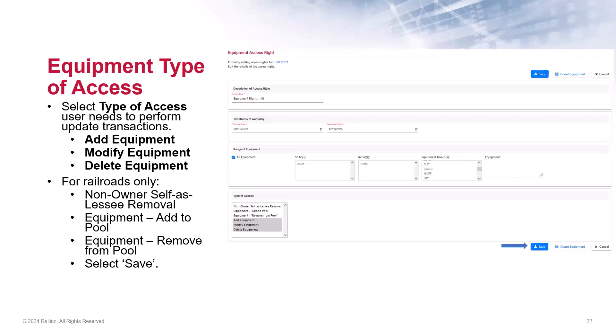For any equipment-related access requirements, admins can specify the range of equipment. But this user will have access to all equipment and you will select the specific type of access the user needs. The equipment type of access is important for the user to be able to perform certain update transactions such as Add, Modify, and Delete. For railroad companies, they would choose Add, Modify, Delete equipment, and additional access is available such as the non-owner lessee removal and the access to add or remove cars from a pool assignment. For this user, they will receive the standard Add, Modify, and Delete equipment access. When finished, click Save.